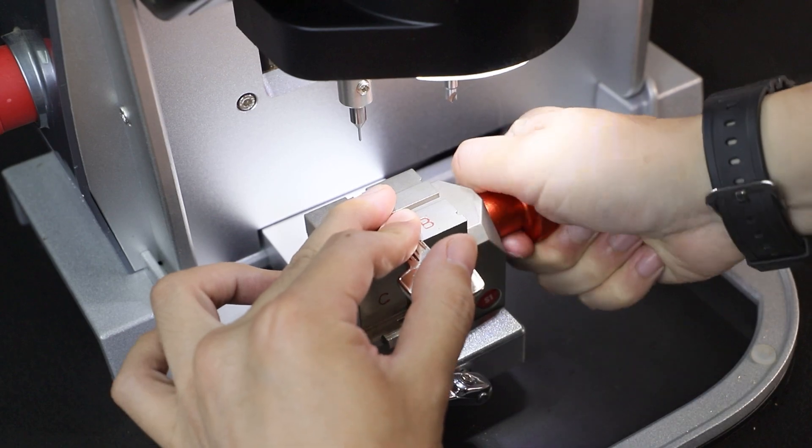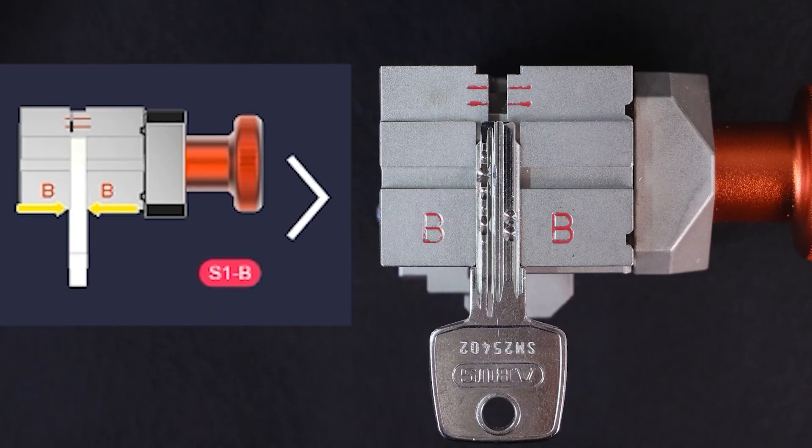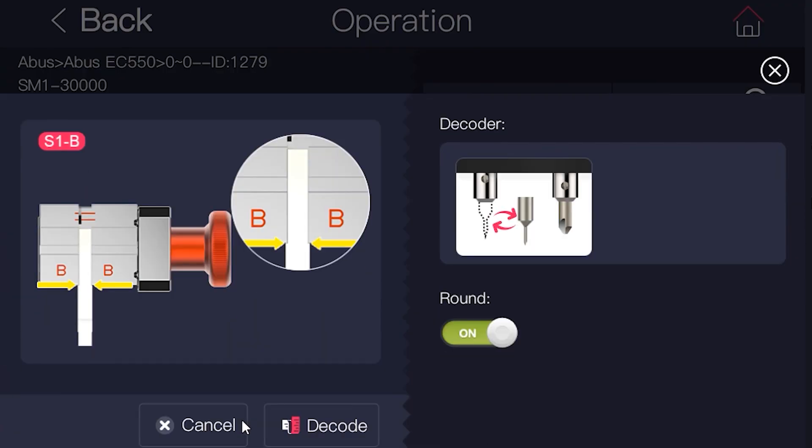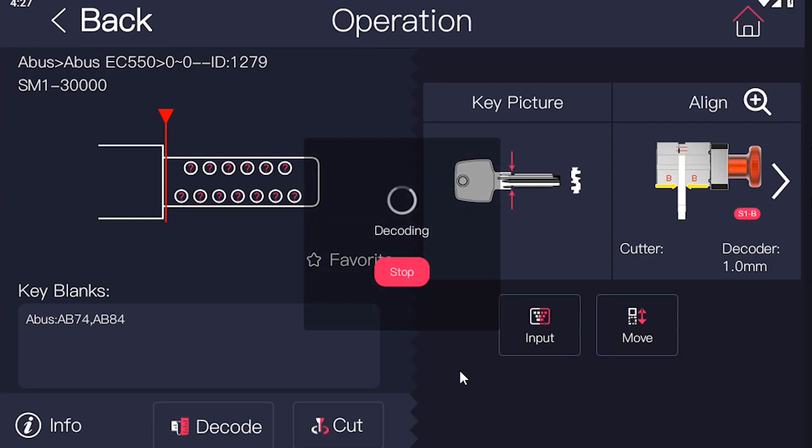Fix the original key in the side B of S1 jaw shown in the figure. Make sure the key is fixed flatly and the jaw is clean of shavings. Then click decode to decode the bitting number.